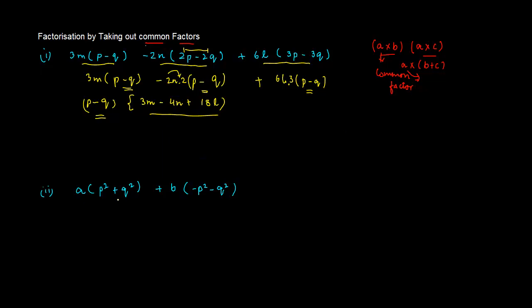Let us see the second problem. Again, we have A into P square plus Q square plus B into minus P square minus Q square. Again, at first look, it might seem there is nothing common. But if you look at this, which is minus P square minus Q square, if we take out minus 1 from both of them, what are we left with? We are left with P square plus Q square, which is the multiple out here.